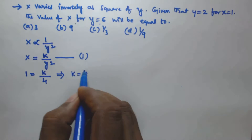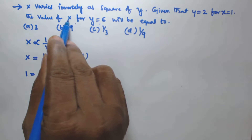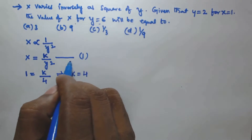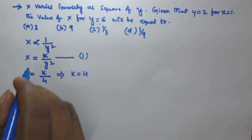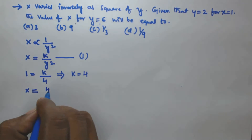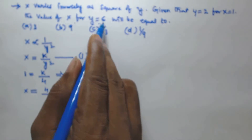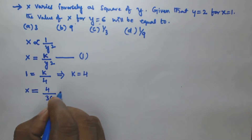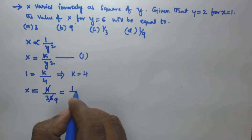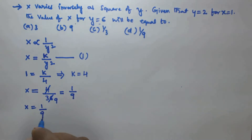Now we have to find the value of x for y equal to 6. We have k equal to 4 and y equal to 6. Substituting in equation 1: x is equal to k by y squared, so x equals 4 by 6 squared, which is 4 by 36. Simplifying, x is equal to 1 by 9.